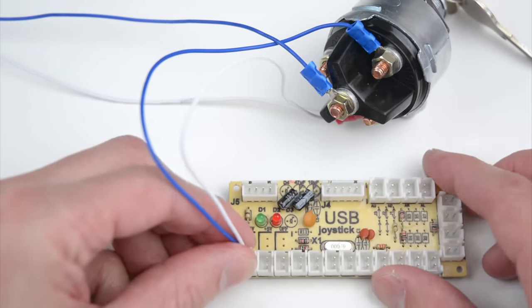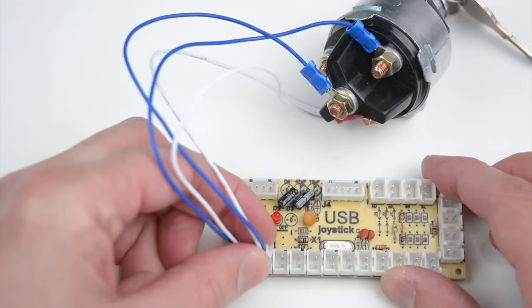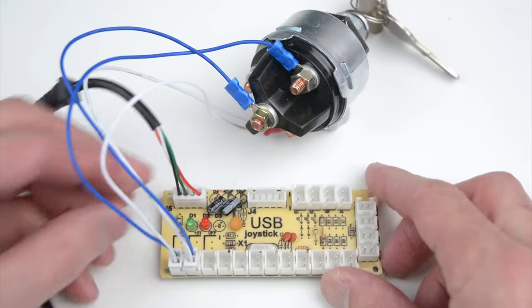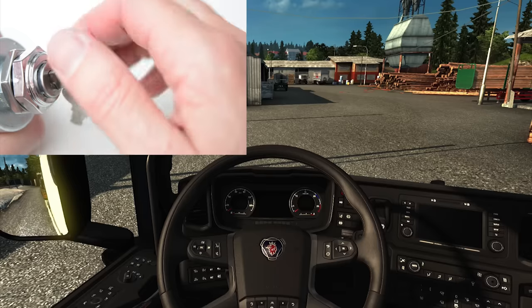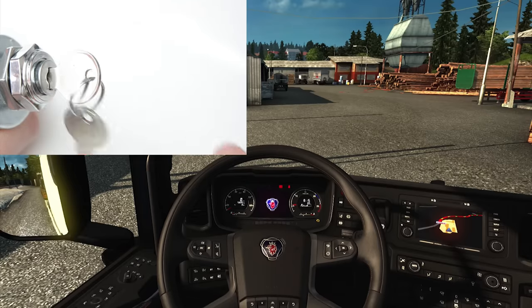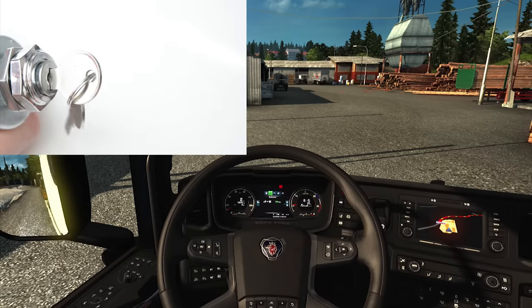Next, plug in the connections from the key starter switch to the USB joystick encoder. Then plug in the USB cable connection. Plug the USB cable into a PC, then map and assign the functions in the game's menu. The starter key can now be used in game to control the start and stop of the engine.